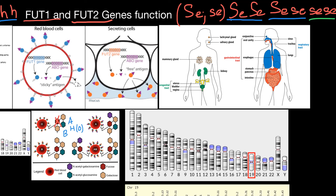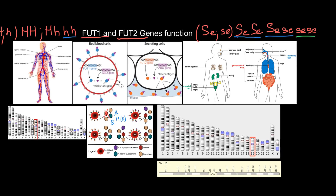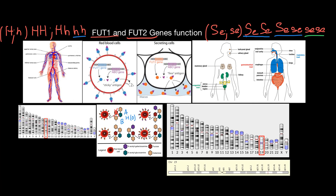If you have two defective alleles you won't secrete these antigens. About 20 percent of people are non-secretors — a very large number — indicating it is beneficial in many cases to be a non-secretor, but also beneficial to be a secretor depending on the situation. Variation in our genes is beneficial for our survival. That's all for today — thank you for your attention, please subscribe for my new videos that I post almost every day, and see you in the next video. Goodbye!